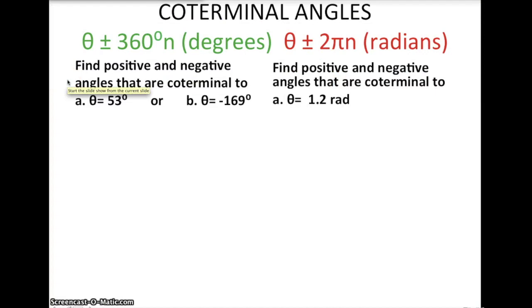This is a trigonometry lesson on coterminal angles. Coterminal angles are angles that are—well, let's look at a unit circle. On the unit circle, there are a certain angle, and if you want to go one full rotation, either positive or negative, you end up at 360 degrees, either in the counterclockwise direction, positive, or 360 degrees in the negative, the clockwise direction, back to the same angle.